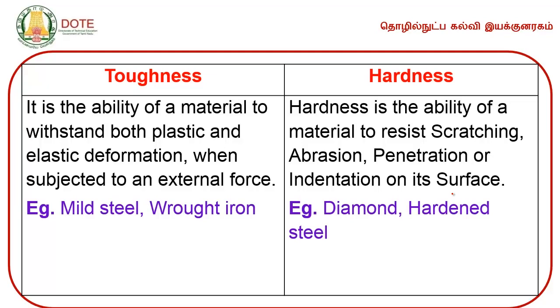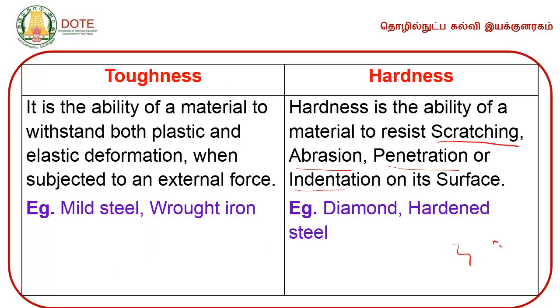Hardness is the ability of the material to resist scratching, abrasion, penetration, or indentation on its surface. The material should resist scratch from abrasive grinding wheels, and should resist penetration or indentation such as punching. Best examples are diamond and hardened steel.